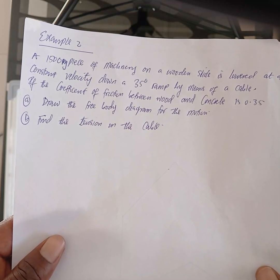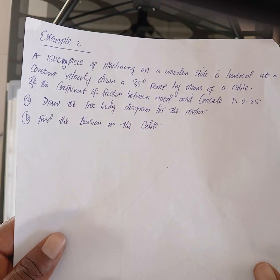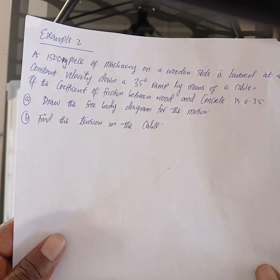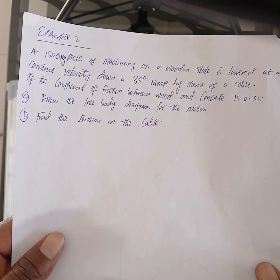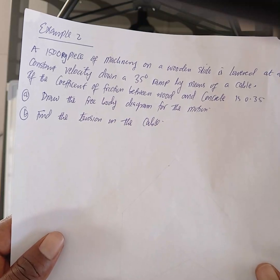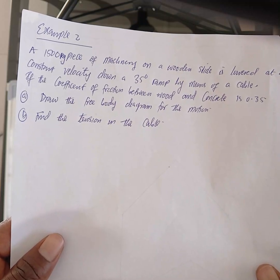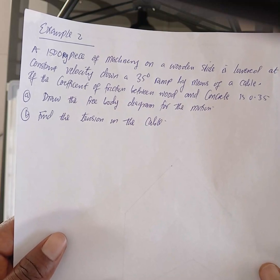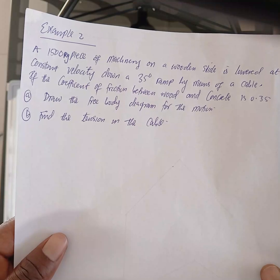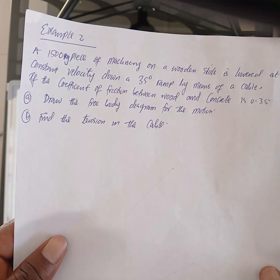If the coefficient of friction between the wood and the concrete, which is the ramp, is 0.35. Part A: Draw the free body diagram for the motion. Part B: Find the tension in the cable.